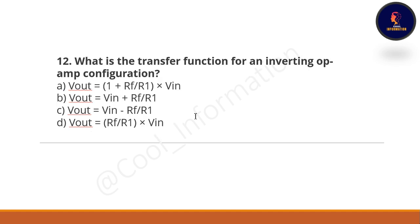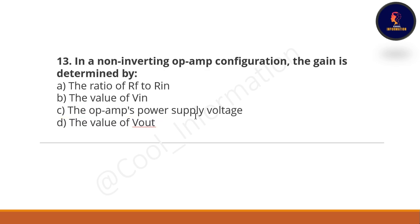Next question: What is the transfer function for an inverting op-amp configuration? Option A: V-out = (1 + Rf/R1) × Vin. Option B: V-out = Vin + Rf/R1. Option C: V-out = Vin − Rf/R1. Option D: V-out = −(Rf/R1) × Vin. The correct option is V-output = −(Rf/R1) × Vin.